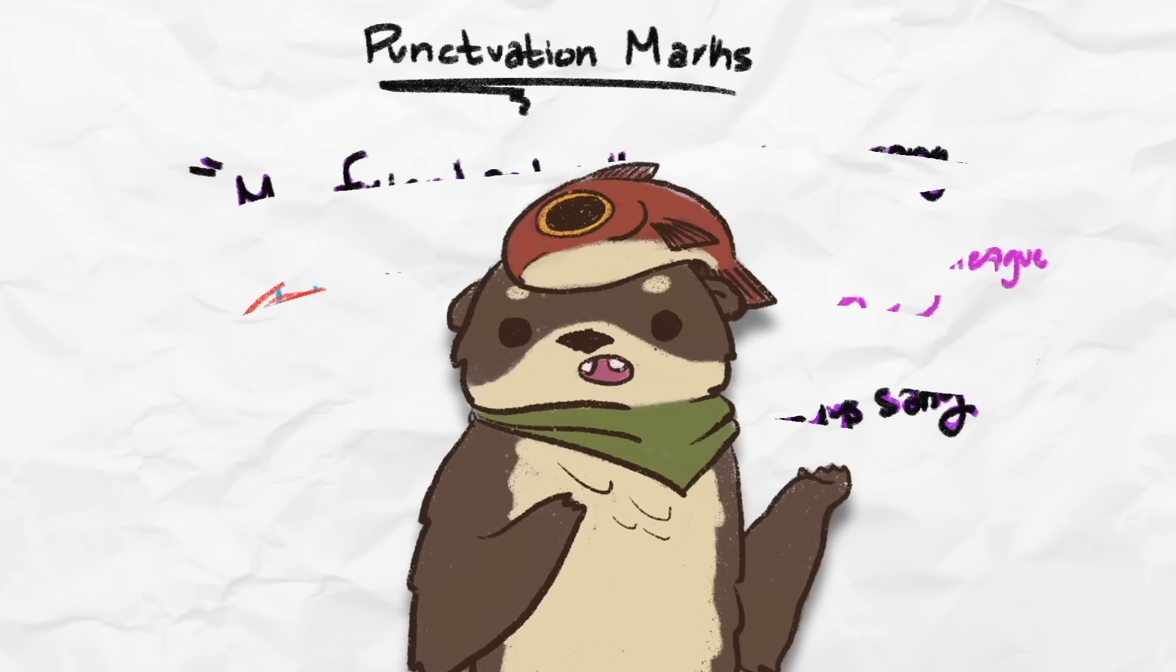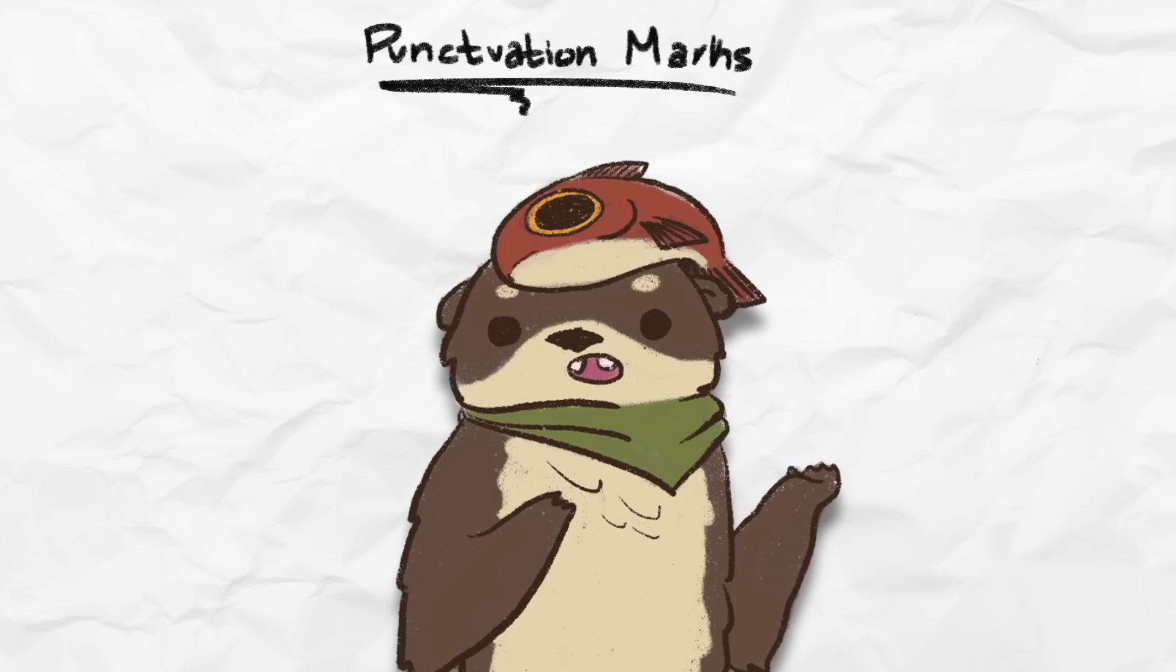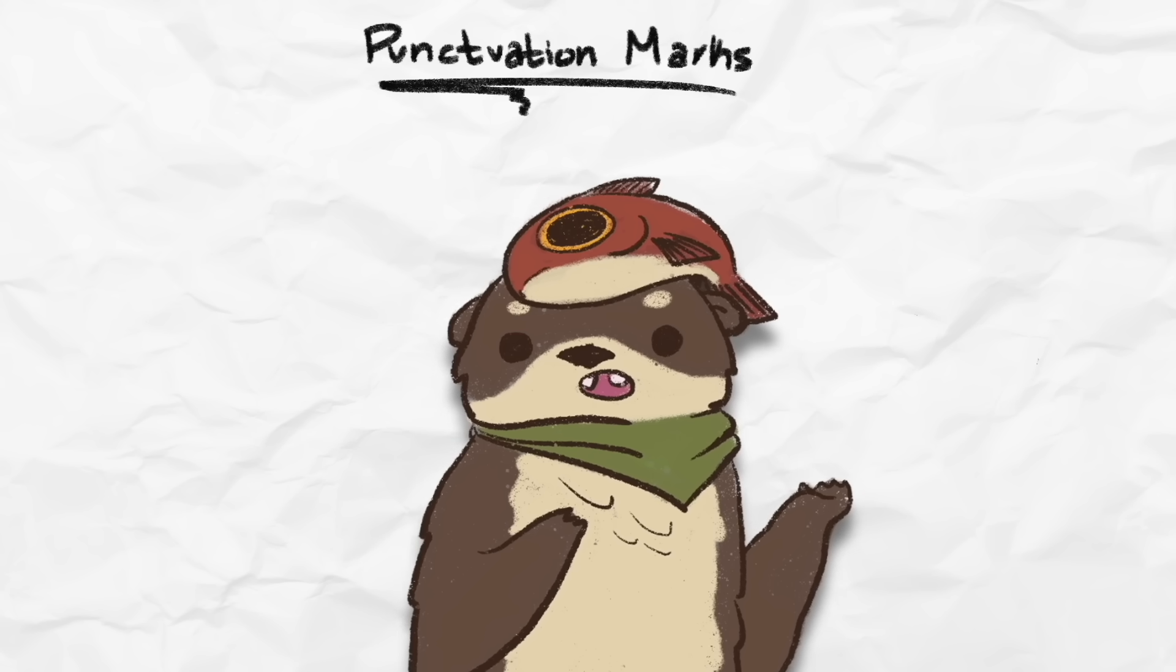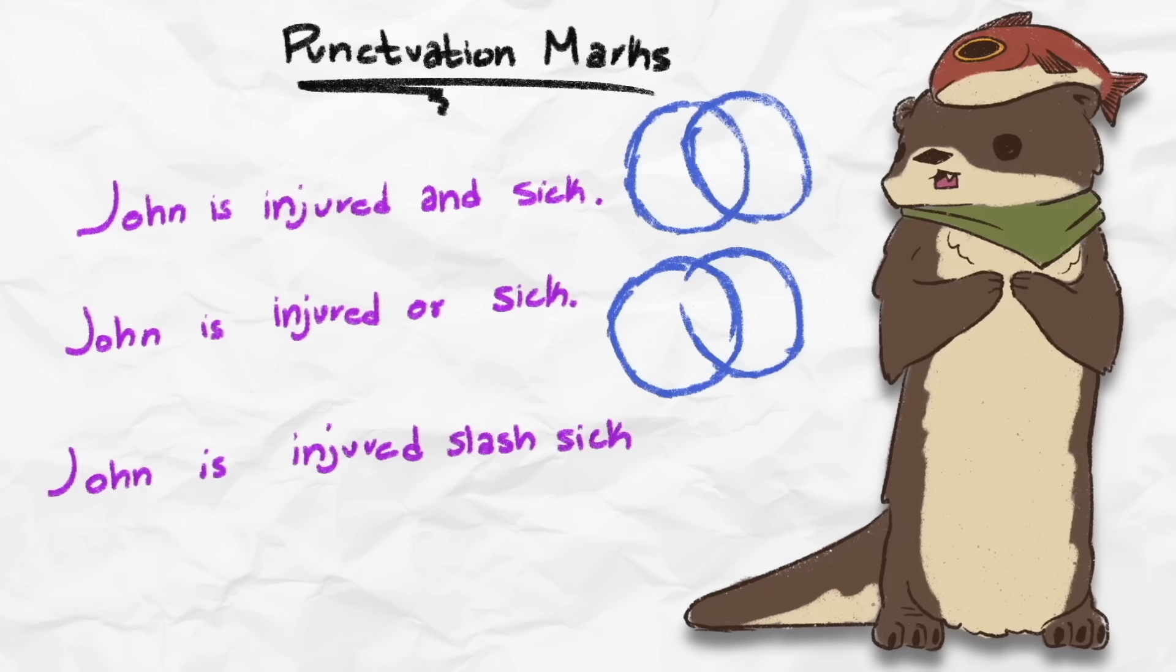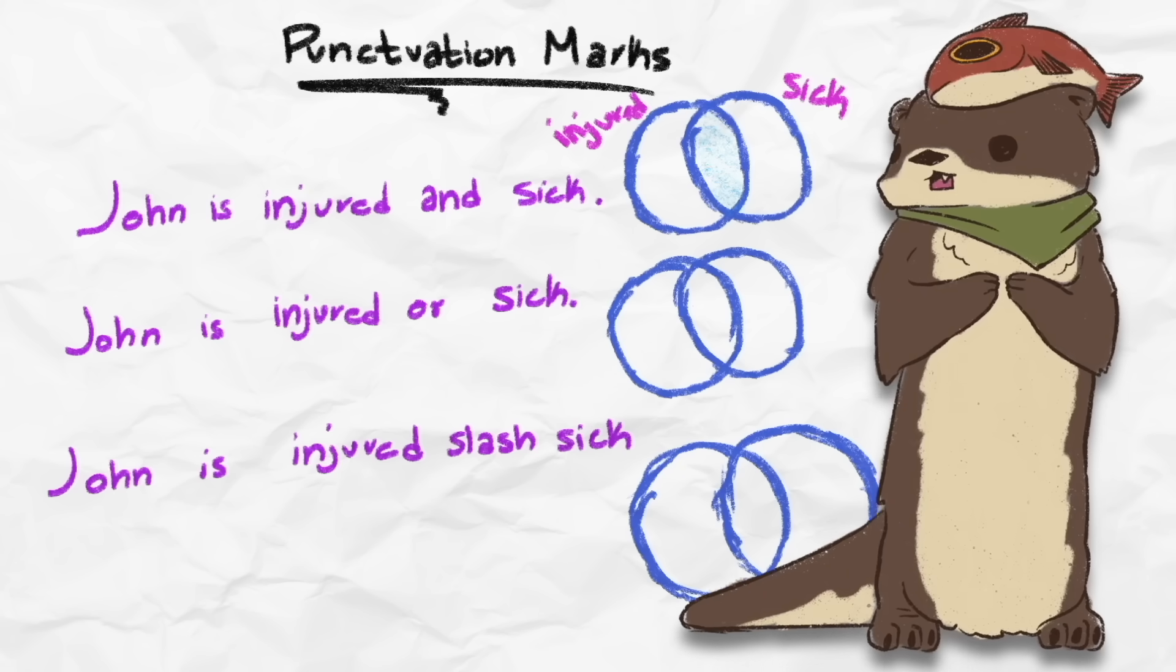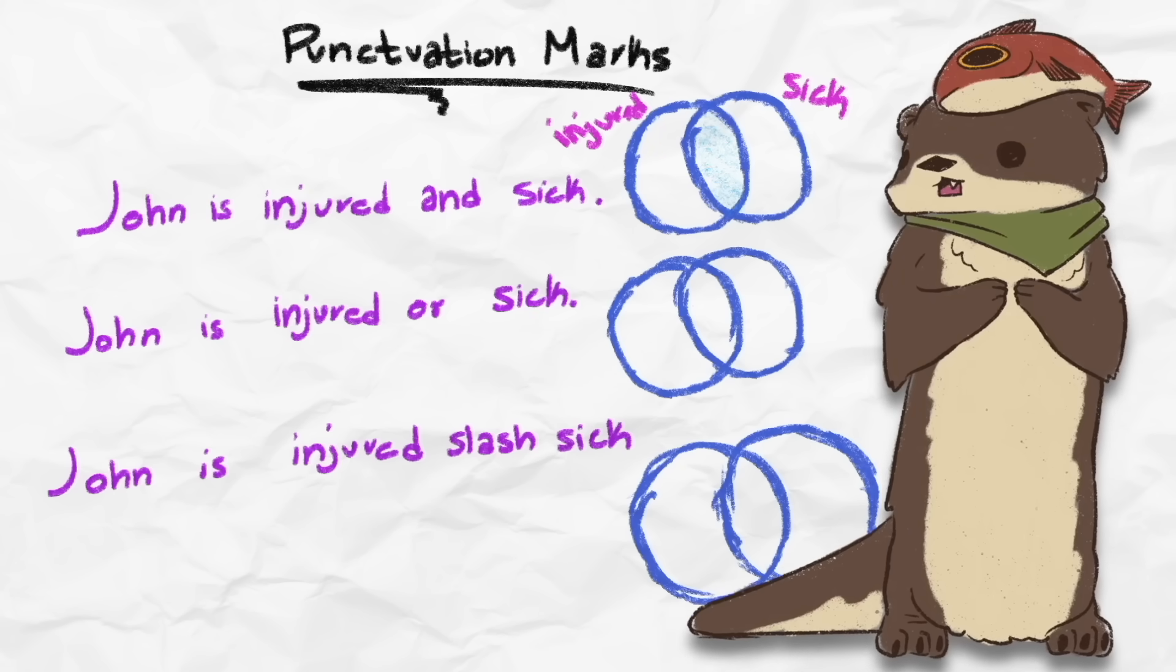That's not all slash can do, however. When it comes to adjectives, it serves another useful purpose. For example, take these three sentences. John is injured and sick. John is injured or sick. John is injured slash sick. The first sentence uses and, so we definitely know that John is both injured and sick. He could have broken his leg and got a pneumonia at the same time. Meanwhile, the second sentence is using or, which suggests that he has to be either one or the other, but not both.